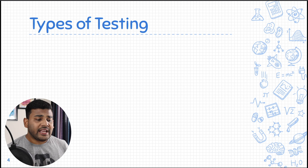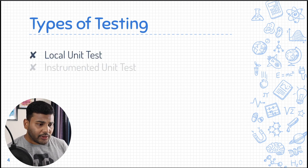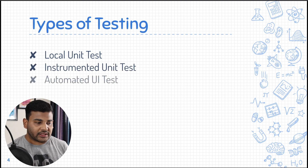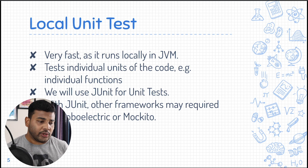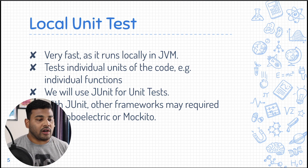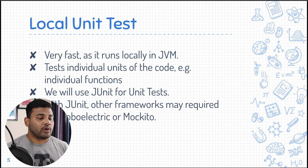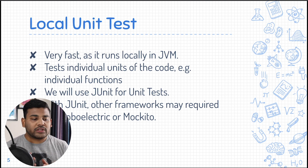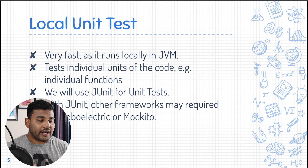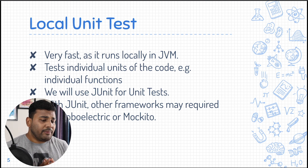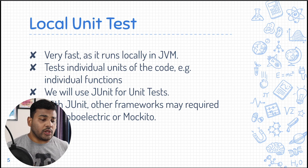In Android we basically have three types of testing: local unit test, instrumented unit test, and automated UI test. Local unit tests are tests that do not require any Android APIs or framework. We write local unit tests to test the logic of our code — for example, a function that does something and is not dependent on any Android-related classes like Activity, Context, or Fragment. It is basically raw Java or Kotlin code that we test using the JVM only.